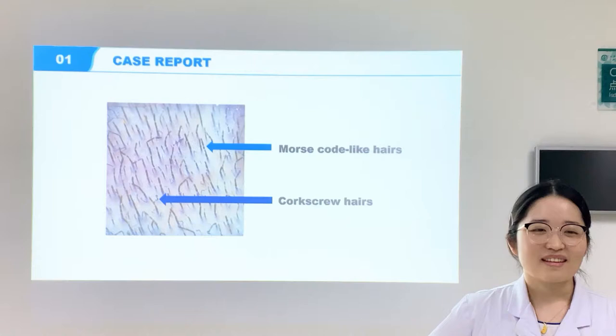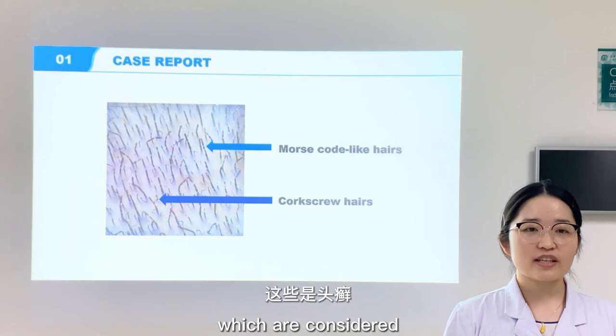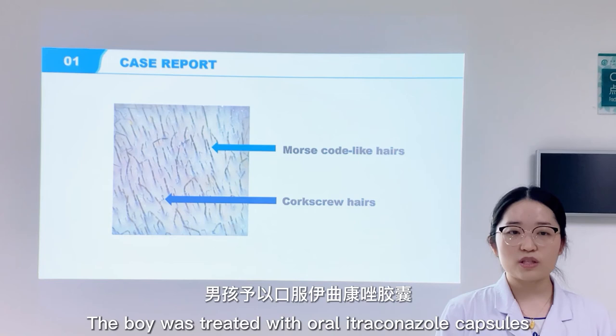These are the morse-code-like hairs and corkscrew hairs in the alopecia area of the boy, which are considered characteristic dermoscopic features of tinea capitis.